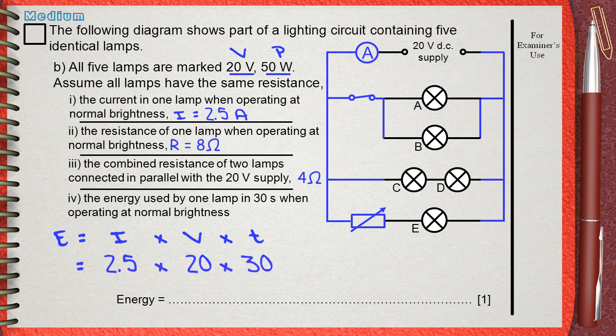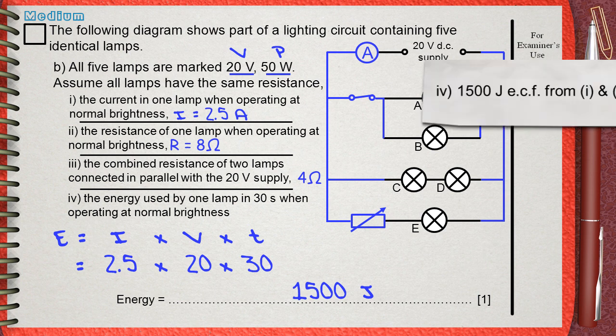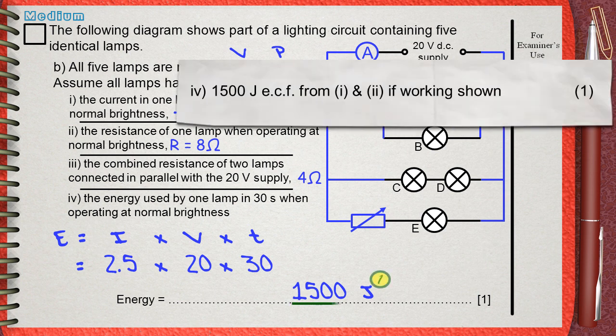The current intensity I is 2.5, voltage V is 20, time is 30. This gives the final answer 1500 Joules. And this is exactly what the mark scheme awards the final answer for. 1500 Joules. We got the final mark.